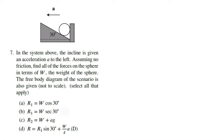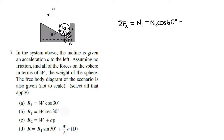The next question is a dynamics problem. In the system, the incline is given an acceleration A to the left. Assuming no friction, find all the forces on the sphere in terms of W, the weight. We establish N₁ and N₂ as our normal forces plus W, then sum forces in x and y. In the x-direction: N₂ cos(60°) = MA = (W/g)A, since the incline angle is 30° and this angle is 60°. In the y-direction: N₂ sin(60°) − W = 0.